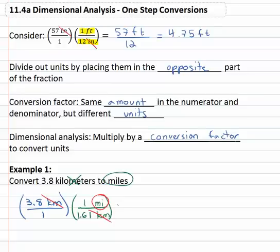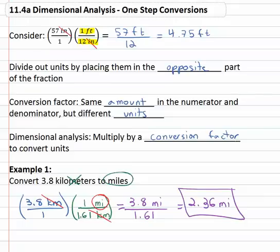So now we can multiply across: 3.8 times 1 is 3.8 miles—keep the units. 1 times 1.61 is 1.61, and now all that's left to do is to divide, probably on our calculator. 3.8 divided by 1.61 is 2.36 if we round it to two decimal places, miles. 3.8 kilometers is the same as 2.36 miles.